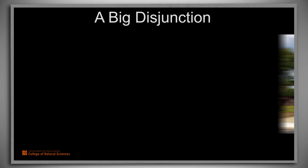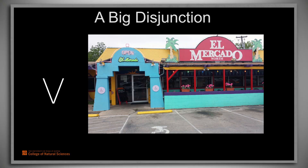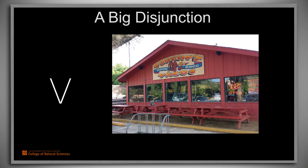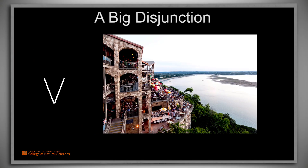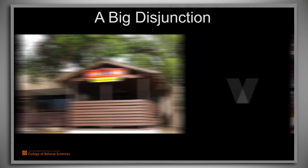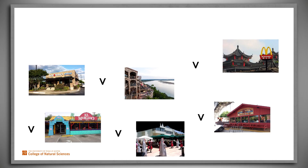Consider the following claim: Schlotzky's is a Mexican restaurant, or El Mercado is a Mexican restaurant, or McDonald's is a Mexican restaurant, or Torchy's is a Mexican restaurant, or Oasis is, or Taco Shack is, or Mighty Bird is, or Cooper's is, and so forth. We could make the claim that somewhere there is a Mexican restaurant by writing a very long disjunction such as this. This claim is true only in case at least one of the disjuncts is true — in other words, exactly in case there is a Mexican restaurant.